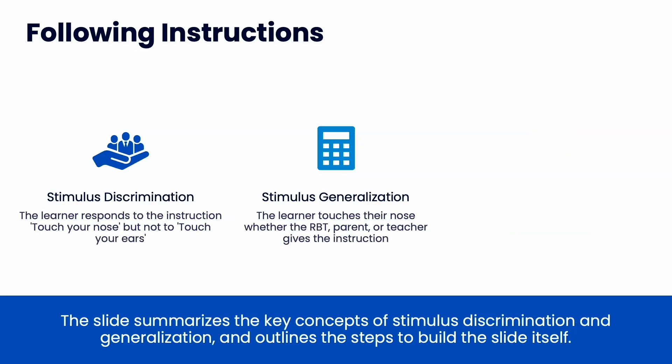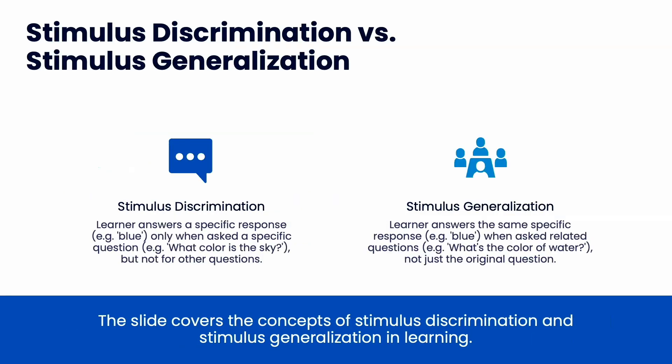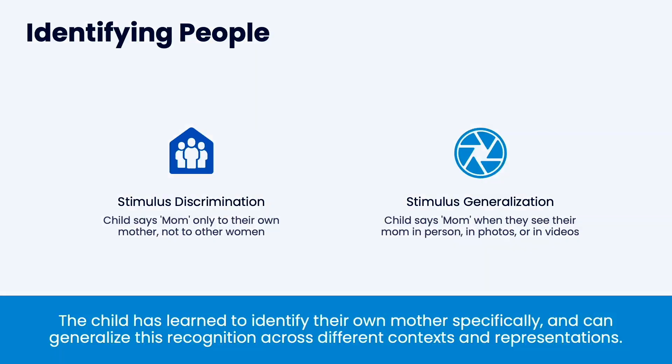For discrimination, you'd want the learner to respond to the instruction touch your nose, but not to touch your ears. For generalization, the learner touches their nose whether the RBT, parent, or teacher gives that instruction. The learner answers blue when asked what color is the sky, but doesn't say blue for what color is the grass — that's discrimination. Generalization: the learner answers blue when asked what color is water or what color is the sky. Identifying people: the child says mom when they see their mom, not other women — discrimination; but says mom when they see their mom in person, in photos, or in videos — that would be generalization.